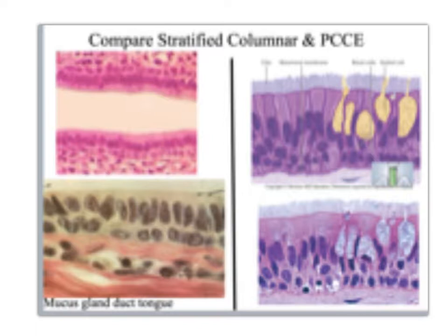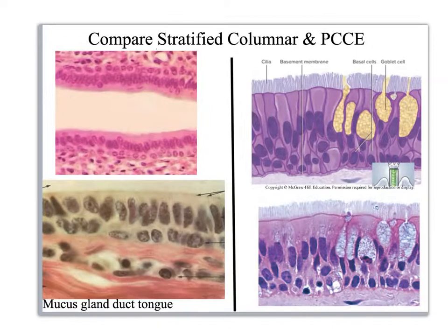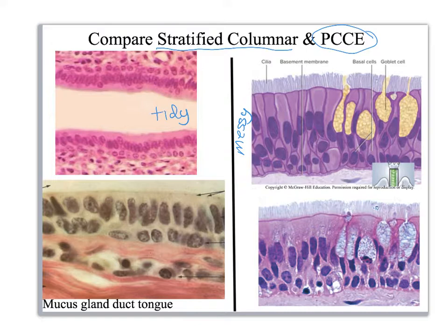When students are confronted with stratified columnar and pseudostratified columnar, they can sometimes get confused. There are very few examples of stratified columnar in the body, so when in doubt, guess pseudostratified columnar. How do you tell the difference? Tidy versus messy. The rows of nuclei are really neatly lined up in stratified columnar, whereas in pseudostratified the nuclei are squashed all over the place. That's basically how you tell the difference.